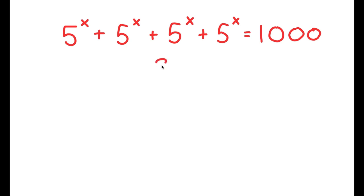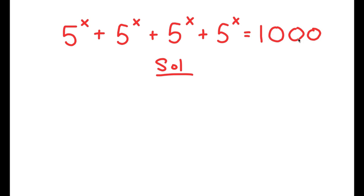For my solution, I'm going to first start by factoring out 5 to the power of x from my left-hand side, because as you can see, we have 4 of the same terms on my left-hand side, and the easiest way to go about solving this equation is to factor them out.